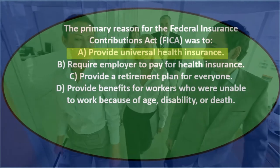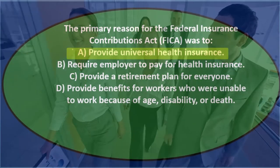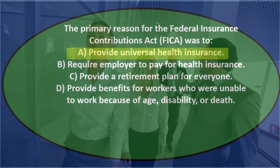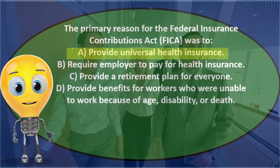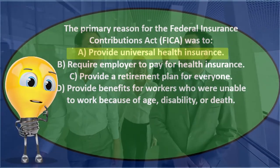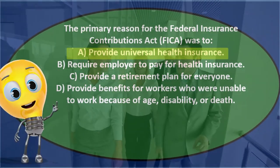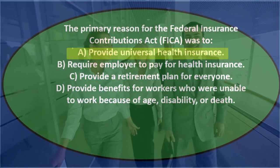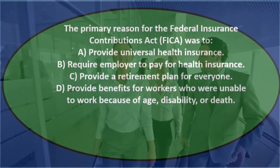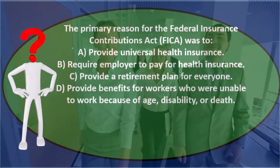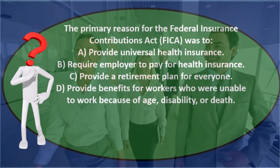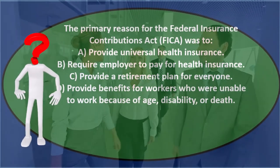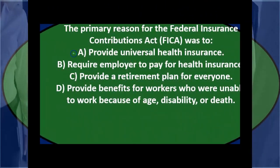Let's go through the process of elimination. A) provide universal health insurance — that's not going to be it, that's not the reason FICA was created. We might want to think about what FICA is first. FICA is going to have two components: Social Security and Medicare. When you see 'provide universal health insurance,' you might say well, Medicare is a component, so let's keep that for now.